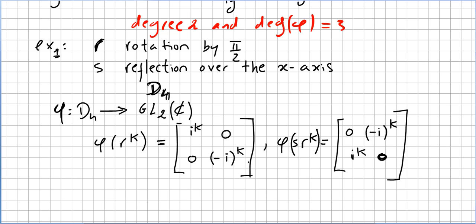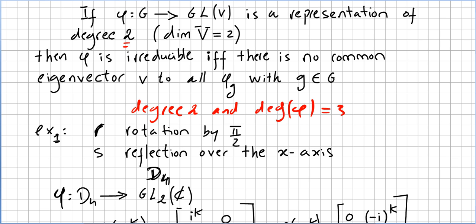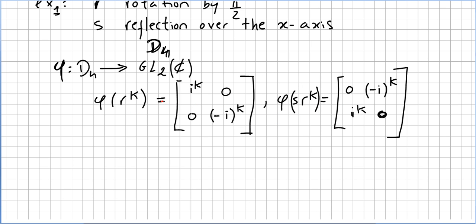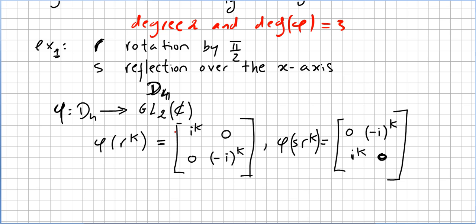Now you can use this, let's call it trick. If phi is a representation of degree 2, then phi is reducible if and only if there is no common eigenvector V to all phi of G. So you can apply that to this example.